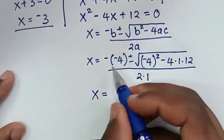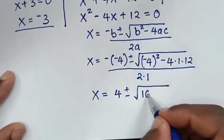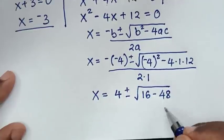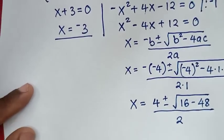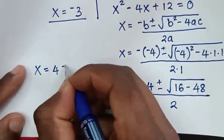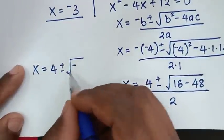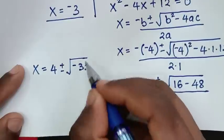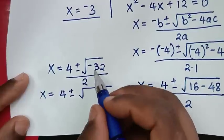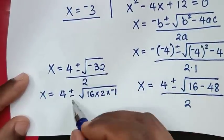Substituting: x equals positive 4 plus or minus square root of (negative 4 squared minus 4 times 1 times 12) over 2 times 1. That is 4 plus or minus square root of (16 minus 48) over 2, which gives square root of negative 32, over 2.